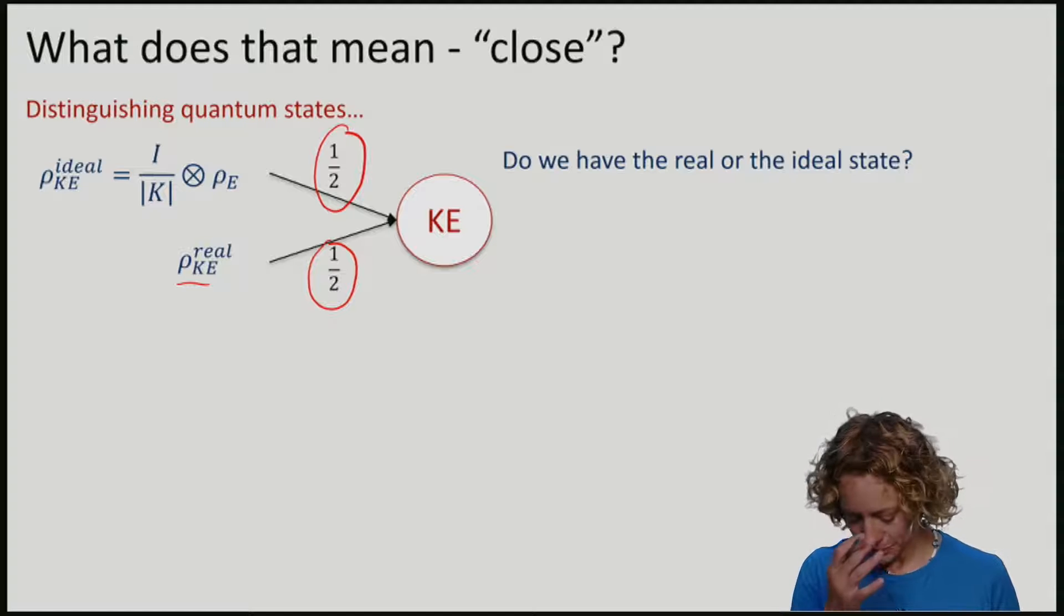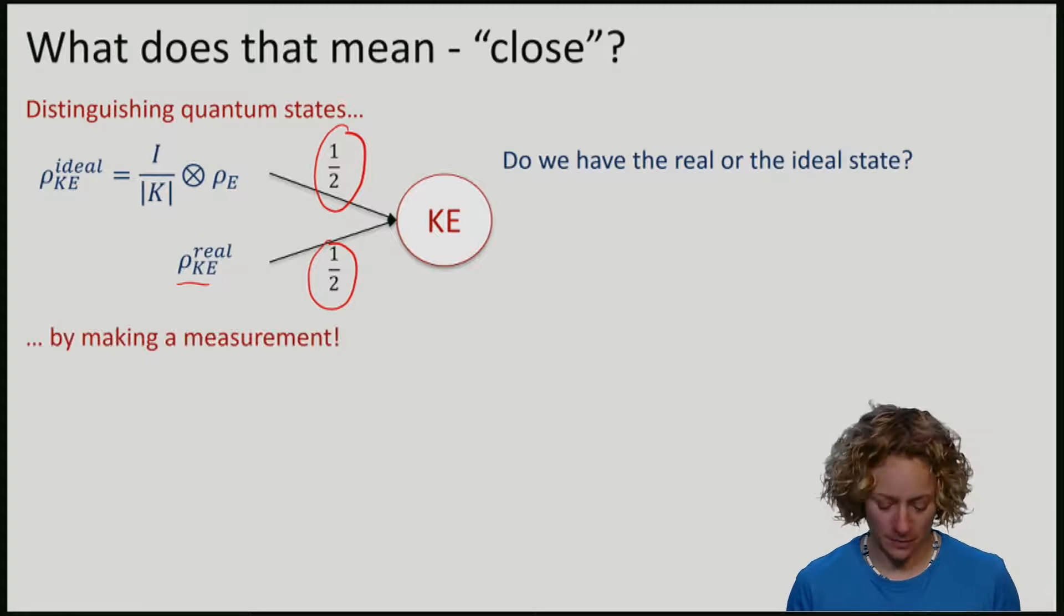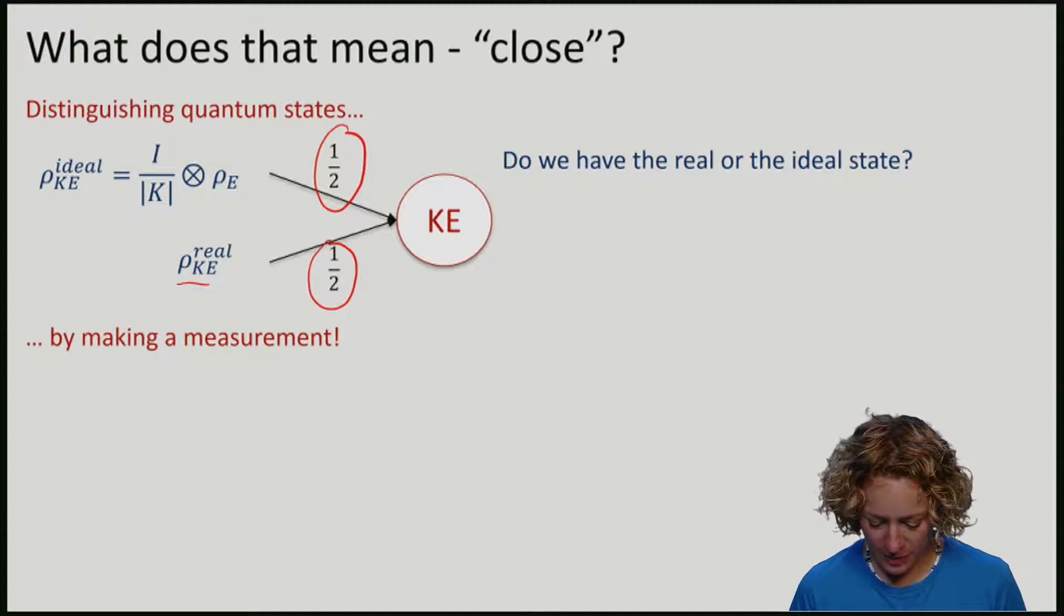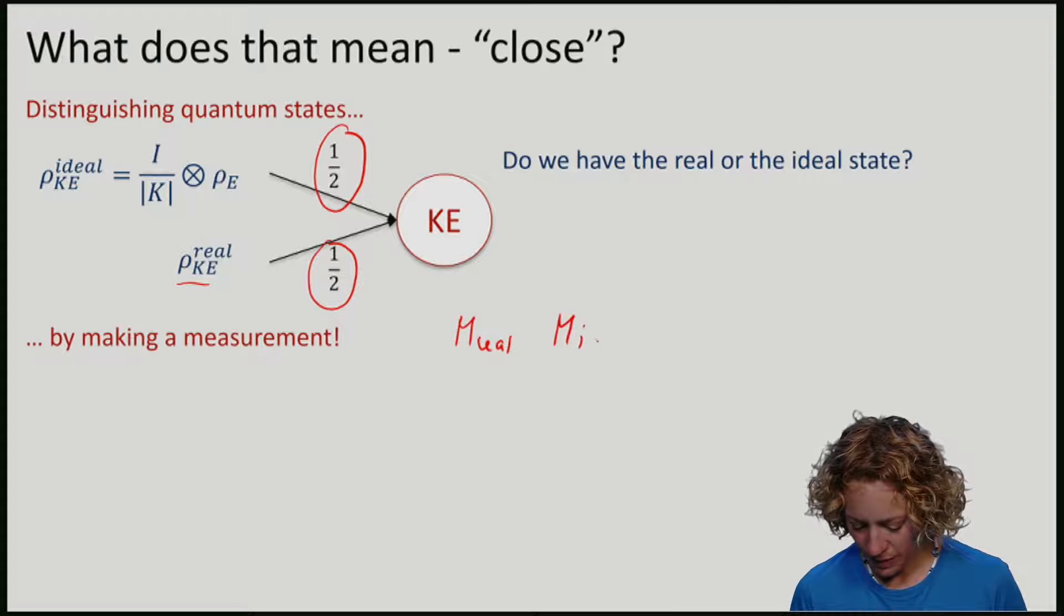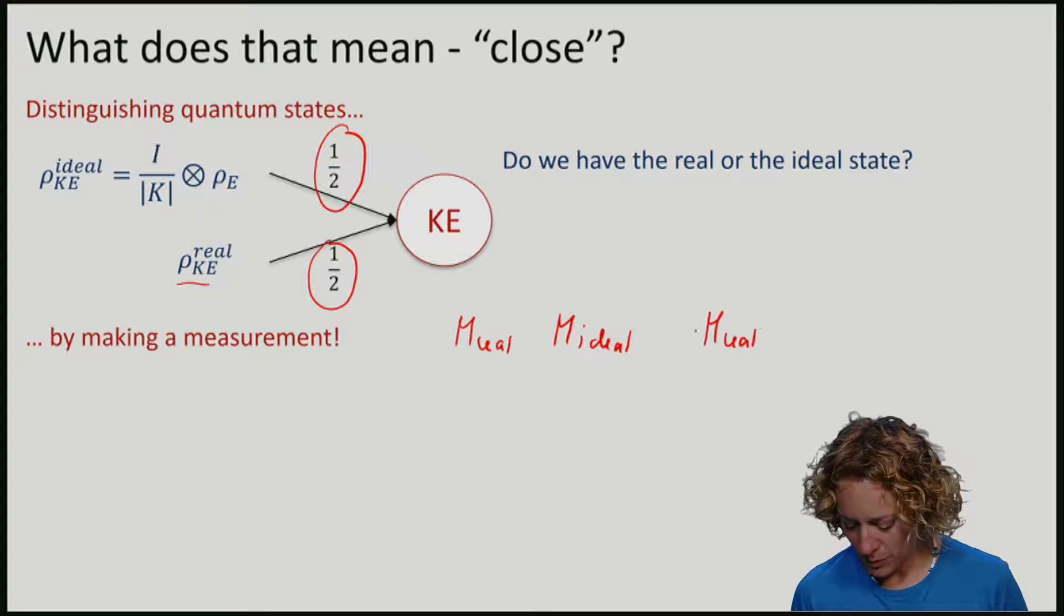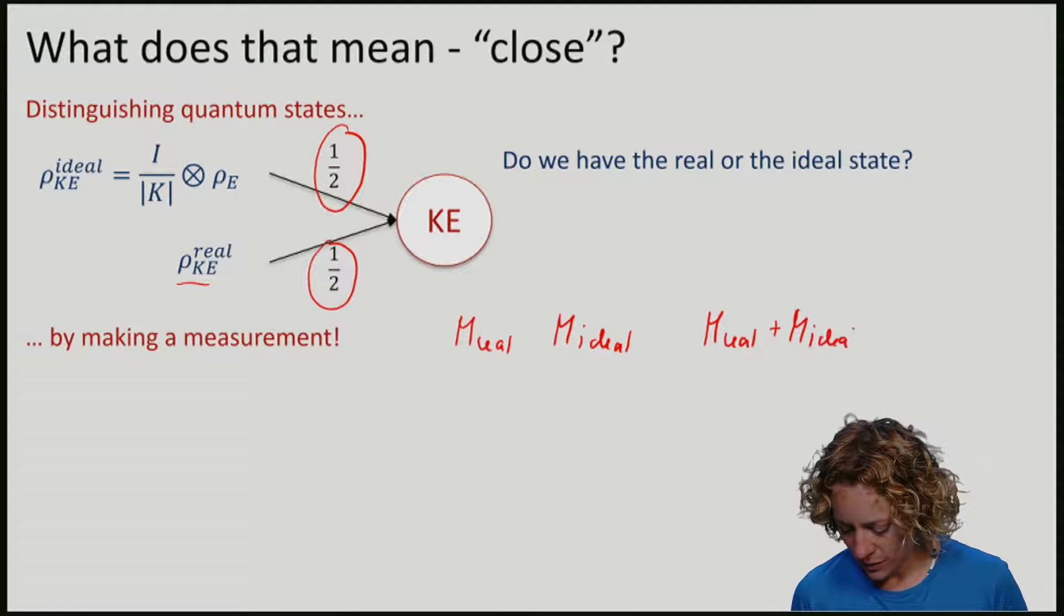What we will do, of course, is to make a measurement. And this measurement will have two outcomes, real and ideal. So, in terms of measurement operators, I will call one of them real, for real outcome, and M ideal. And we know, if I make a POVM, that these two will just add up to the identity.